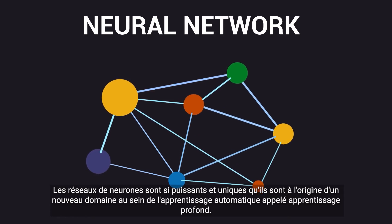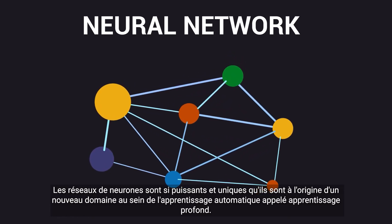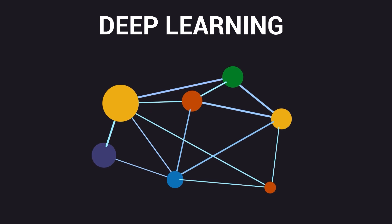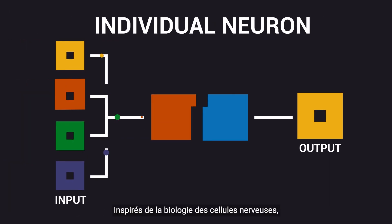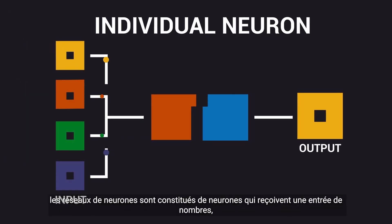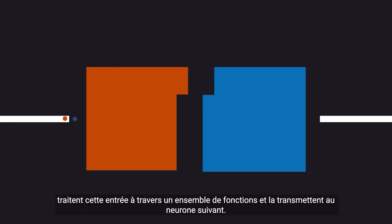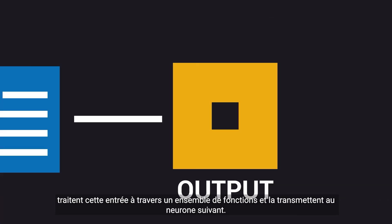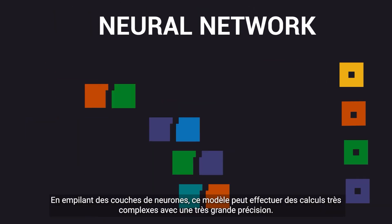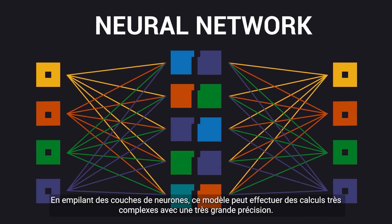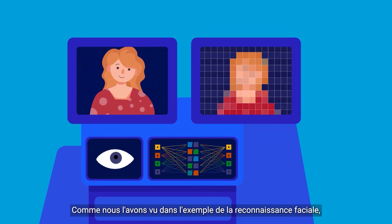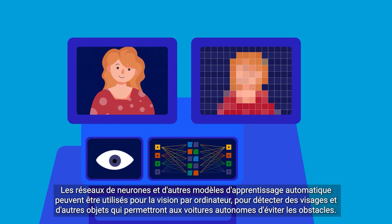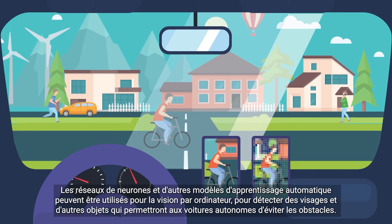Neural networks are so powerful and unique that they originated a new field inside machine learning called deep learning. Inspired by the biology of nerve cells, neural networks consist of neurons that receive an input of numbers, process this input through a set of functions, and transmit it to the next neuron. By stacking layers of neurons together, this model can perform very complex computations with very high accuracy. Neural networks and other machine learning models can be used for computer vision to detect faces and other objects, which will allow self-driving cars to avoid obstacles.